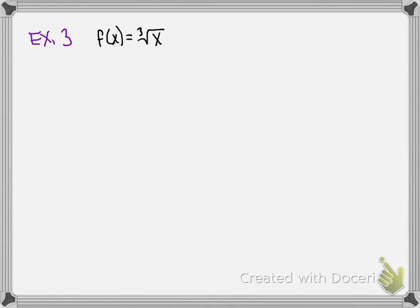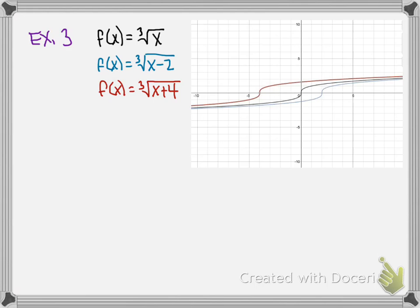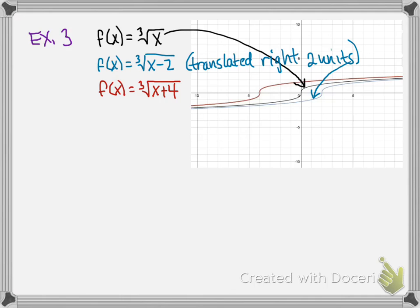Let's look at a final set of examples, again comparing back to the parent function f of x equals the cube root of x. We'll look at f of x equals the cube root of x minus 2, and f of x equals the cube root of x plus 4. Here are these three graphs on a coordinate plane. The parent function is this black graph. f of x equals the cube root of x minus 2 is translated right 2 units, shown by this blue graph. And f of x equals the cube root of x plus 4 is translated left 4 units, shown by this red graph.